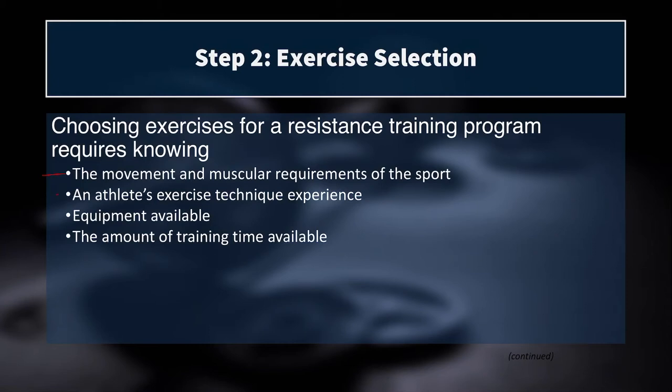We also need to consider an athlete's exercise technique experience. Has this athlete ever trained before? If not, maybe we need to start with a dumbbell goblet squat or even a bodyweight squat to allow the athlete to ingrain a good squat pattern before we load them. If this athlete has been training for two, three, maybe ten years and has excellent technique — perhaps coached by a CSCS-certified coach — then we can consider implementing more complex movements like Olympic weightlifting derivatives or loaded ballistic movements that might be dangerous for a new trainee but pose little risk for an experienced athlete.